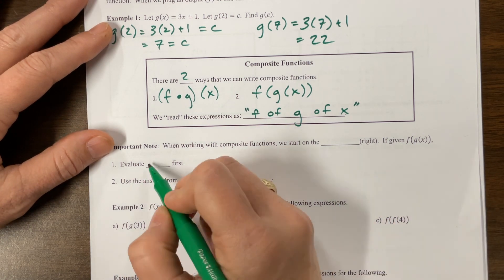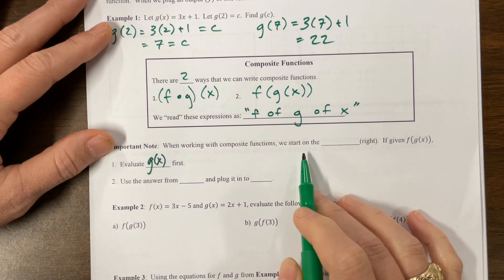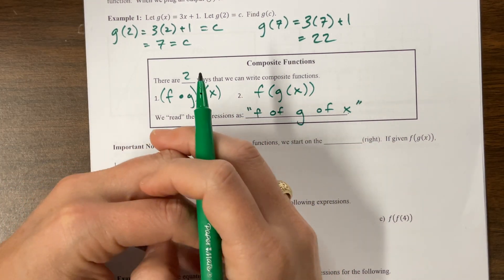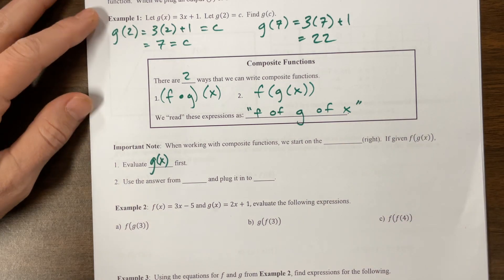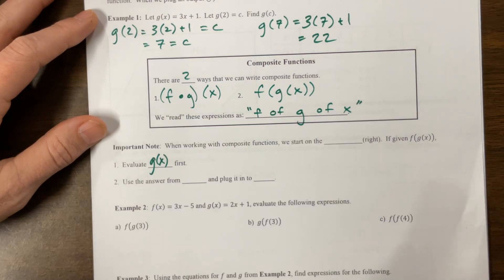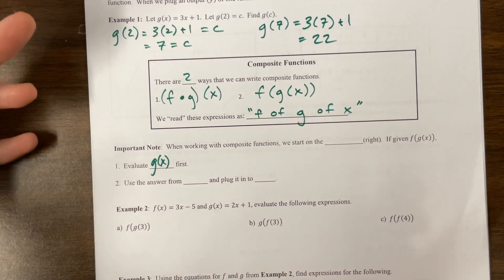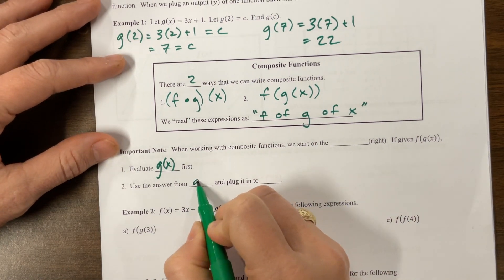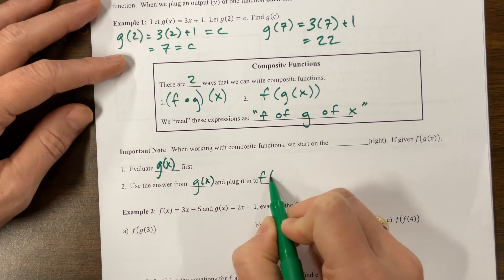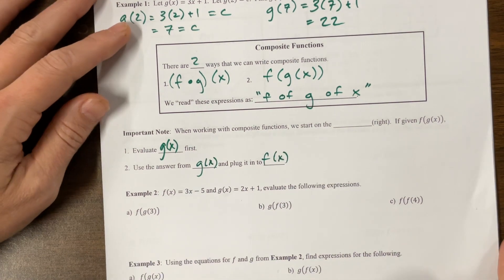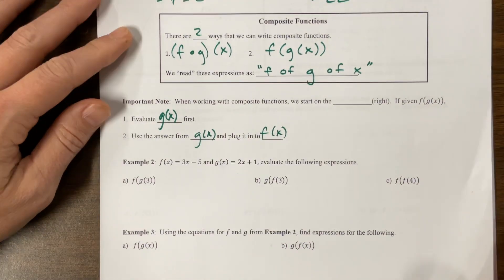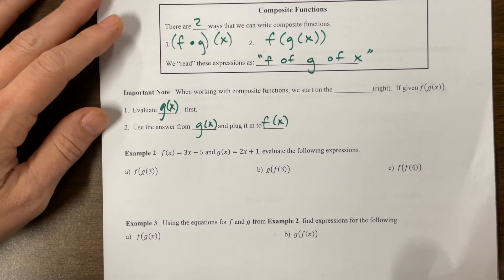If given this, evaluate. We start in the center. It's like you're working your way out of a peanut M&M. You have the peanut, and then you do the chocolate, and then you do the candy shell at the outside. Use that answer from g of x and plug it into f of x is how I would think through that.